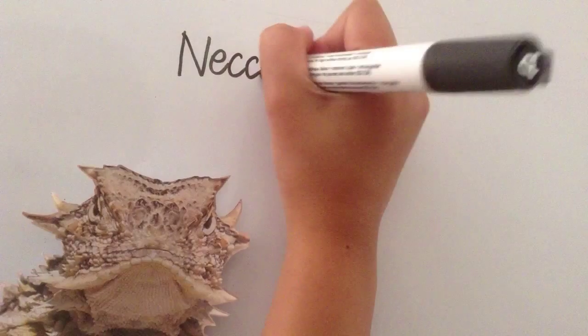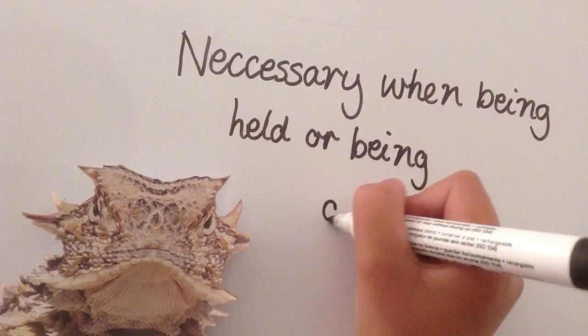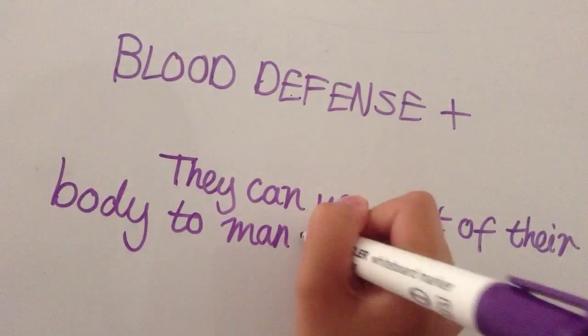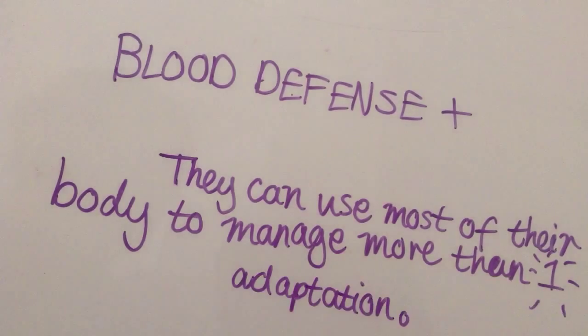The blood defense is necessary when being held or being disturbed. Not only can they shoot blood, but they can also use and manage more than one adaptation.